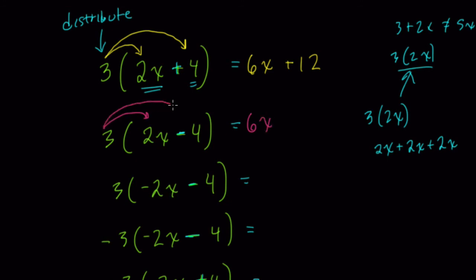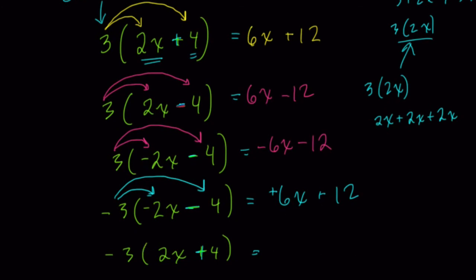But here, be careful, 3 times minus 4, so that's negative now, is minus 12. Here, 3 times negative 2x is just negative 6x. It's just switch signs there. And 3 times negative 4 is the same, minus 12. In this example, we have minus 3 times minus 2x. That's a positive 6x. And minus 3 times minus 4, that's positive 12. Here, last but not least, we have negative 3 times 2x. That's negative 6x. Negative 3 times 4 is negative 12.